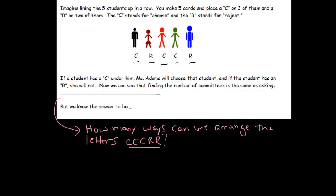We know the answer is simply, well, pretend they're all different, 5 factorial, and then divide by the repeats, 3 factorial times 2 factorial. And that's our answer, whatever number that turns out to be.